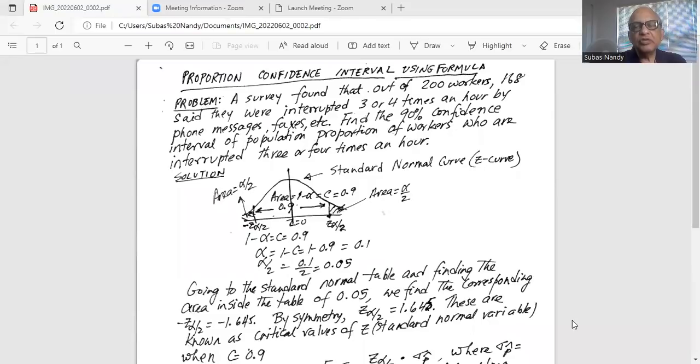This is a problem on proportion confidence interval and I'm going to use the formula. I'll show you how to use the formula to calculate the proportion confidence interval.